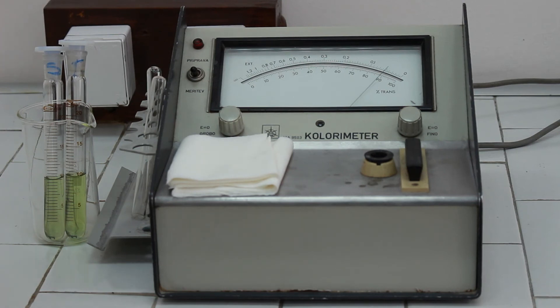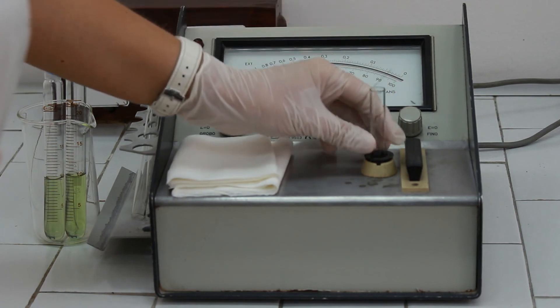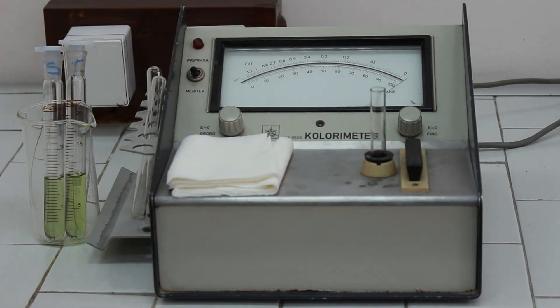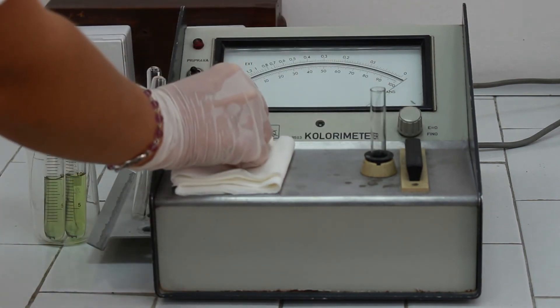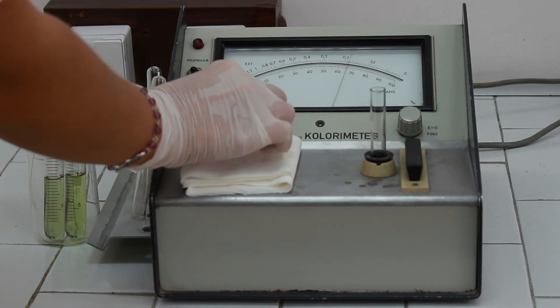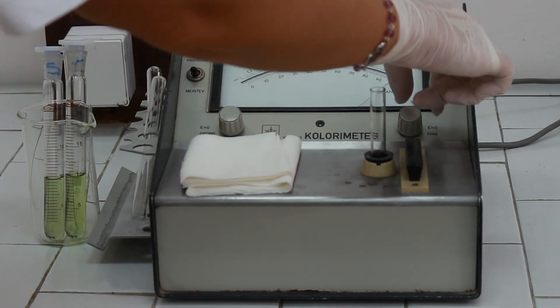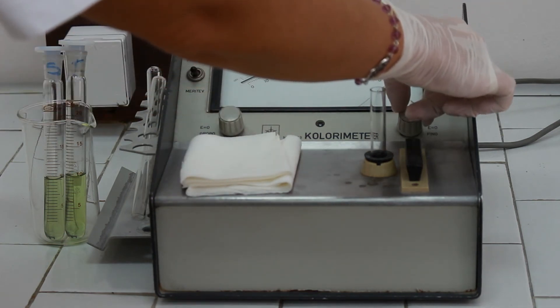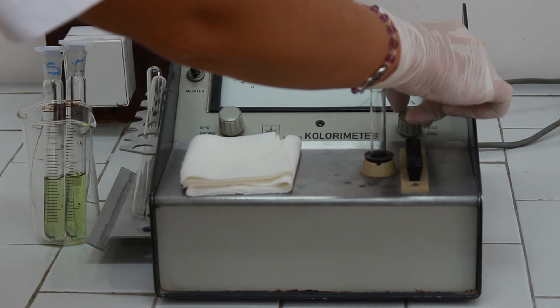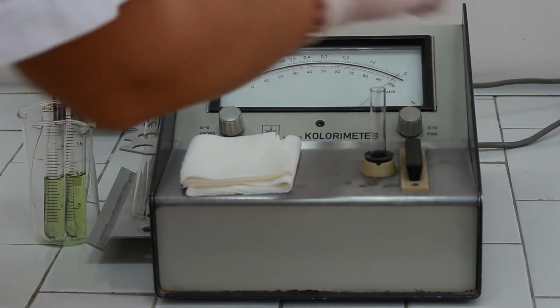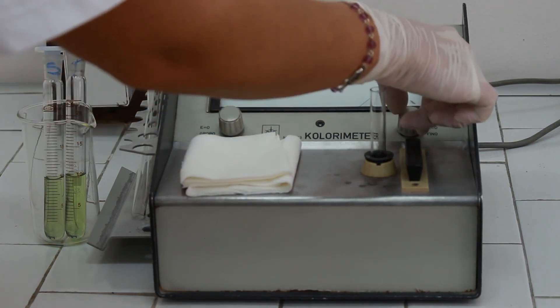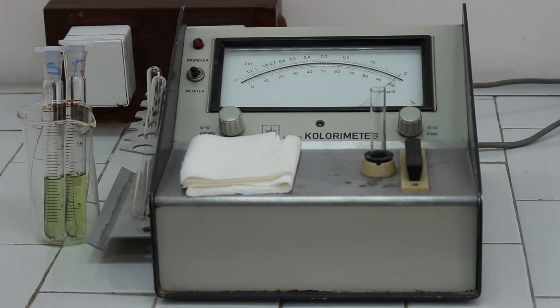Of course the procedure is the same as with any other photometer. First we need to apply the blank solution to the glass cuvette and to place the cuvette to the photometer. And then by using those two wheels to adjust the instrument to zero. Left wheel is used for rough adjustment of the zero of instrument.